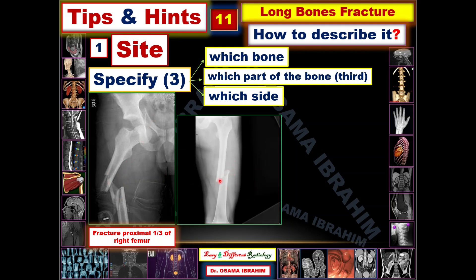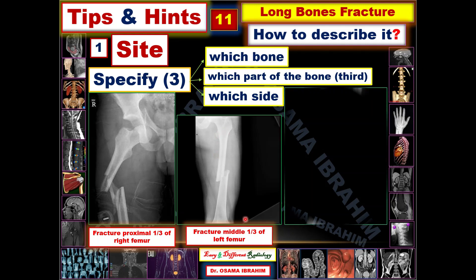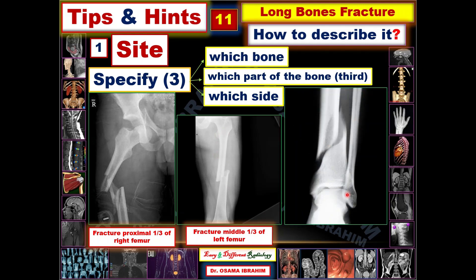For this fracture, if you wanted to specify the site, this is a fracture of the middle one-third of the left femur. This third example shows the tibia — a tibial fracture at the distal end. So this is a fracture at the distal one-third of the left tibia.